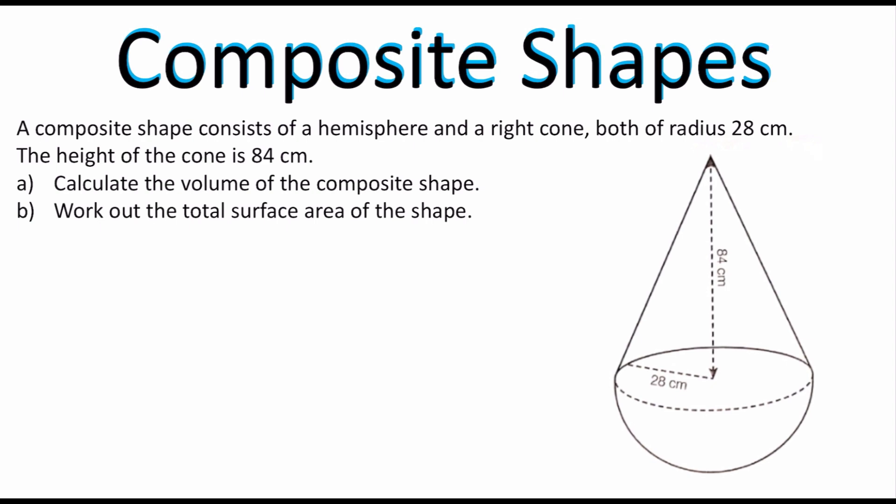So here's the example on your screen. A composite shape consists of a hemisphere and a right cone. Both are radius 28 centimeters. The height of the cone is 84 centimeters. Calculate the volume of the composite shape and work out the total surface area of the shape.